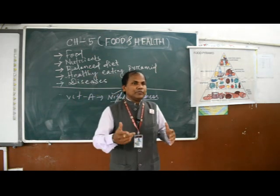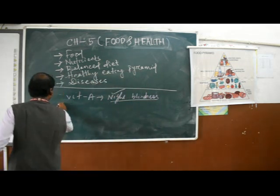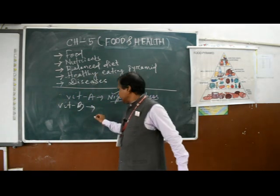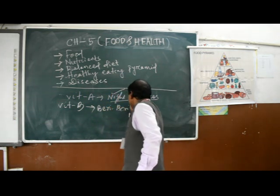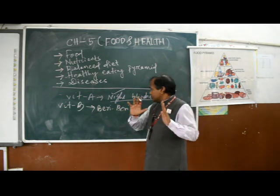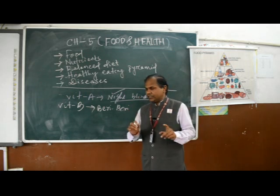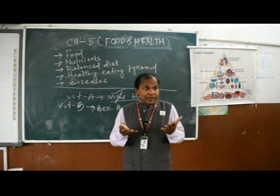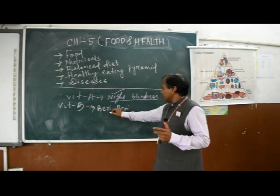The next vitamin deficiency disease is due to Vitamin B. The disease caused by Vitamin B deficiency is beriberi. The symptoms of beriberi are: the child looks severely weak, and body parts may become paralyzed. These two are the main symptoms of beriberi.